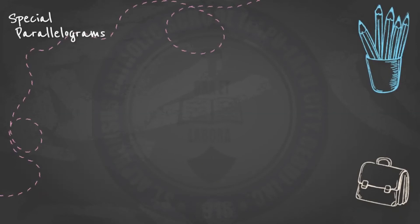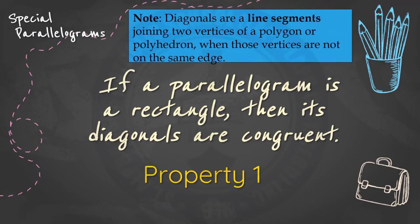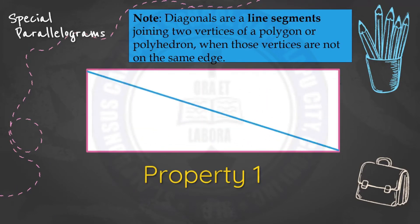Let us look at the other properties of rectangles, rhombuses, and squares. Property 1: if a parallelogram is a rectangle, then its diagonals are congruent. Take note — when you say diagonals, those are the line segments joining two vertices of a polygon that do not lie on the same edge. In this rectangle, the blue line segment represents the diagonals. In a rectangle, the diagonals are congruent, so they must be equal in measure.